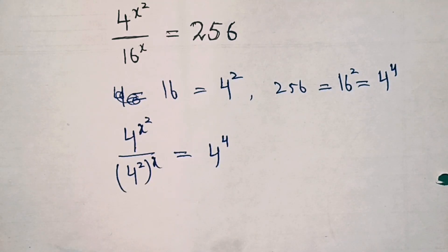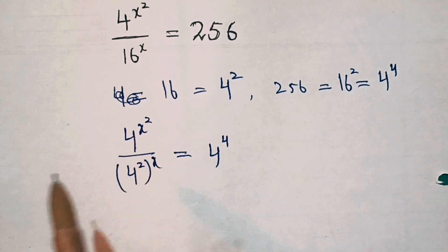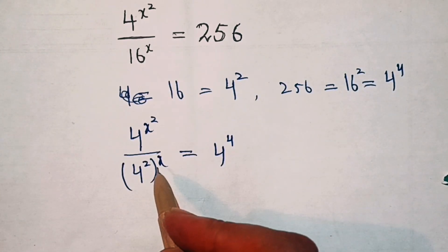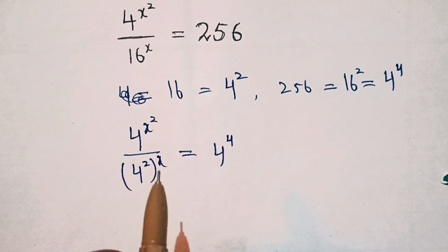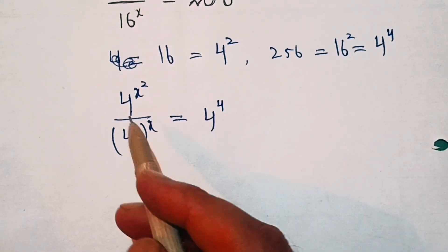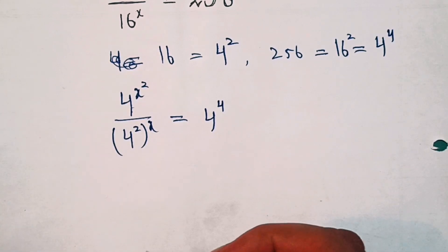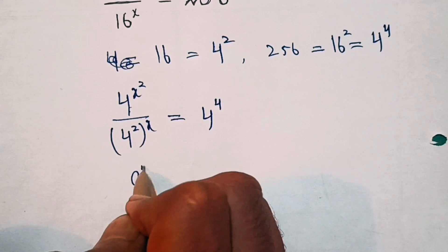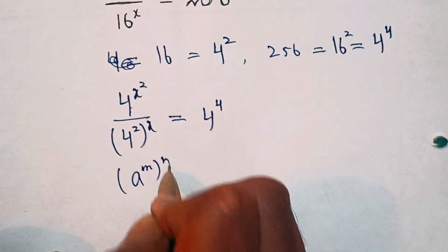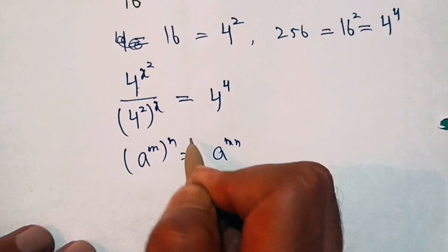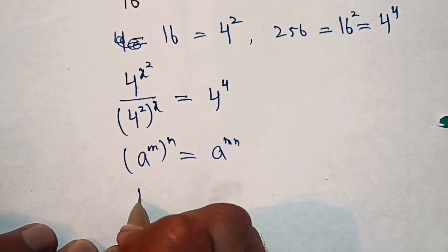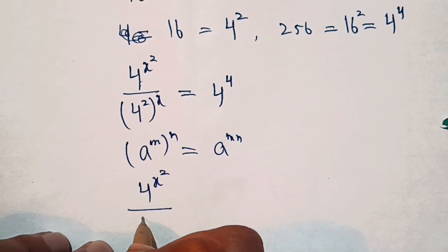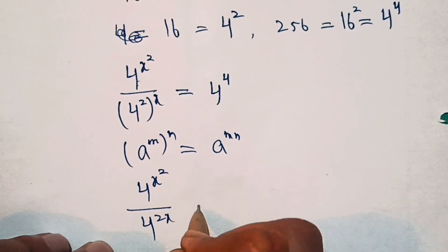Now in the numerator the base is 4 and the exponent is x square, and in the denominator the base is 4 squared and the exponent is x. To further simplify this we will make the base the same. For that we apply the formula a power m into n is equal to a power m times n. So the denominator will become 4 power 2x, giving us 4 power x square over 4 power 2x equal to 4 power 4.